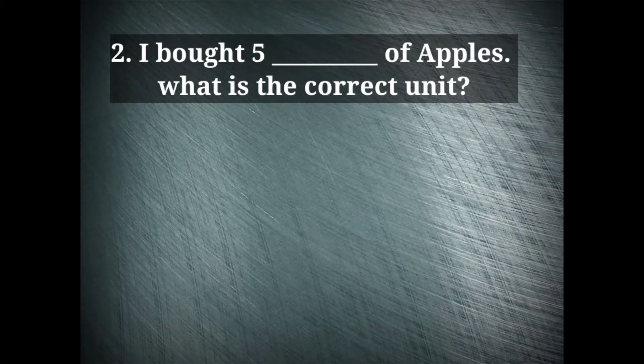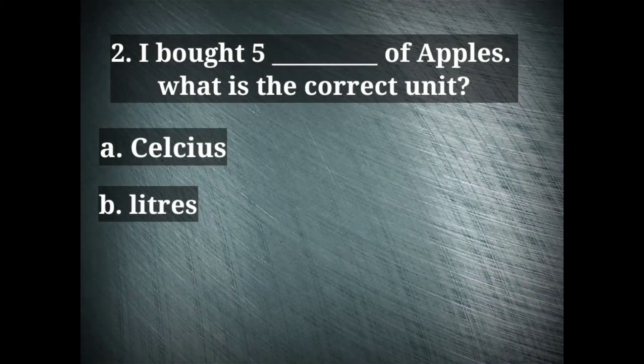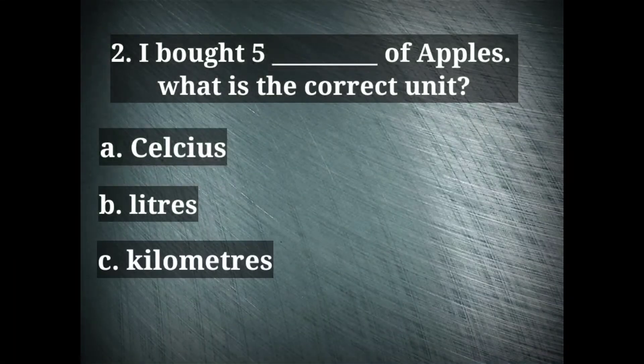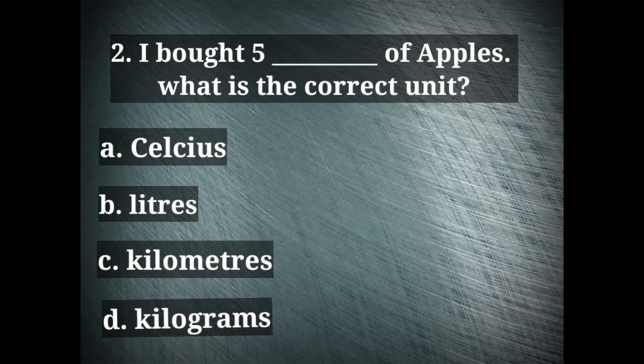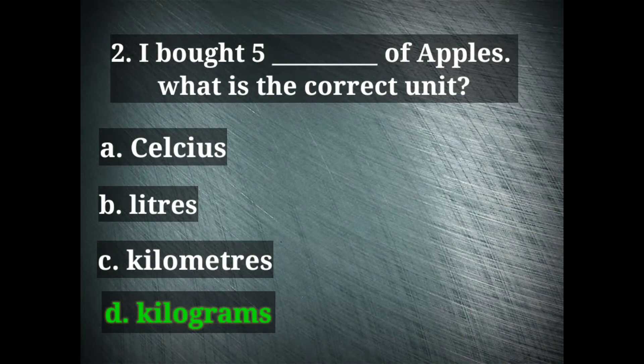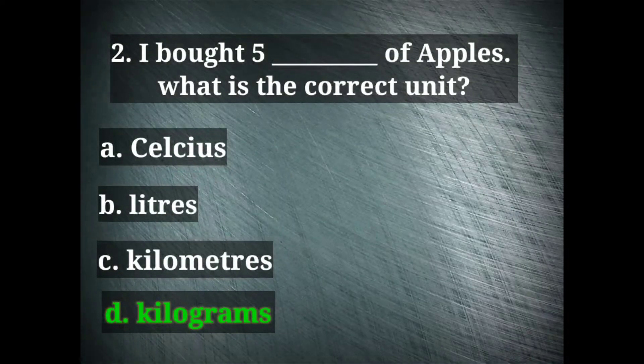Next question is, I bought 5 dash of apples. What is the correct unit? The options we have are celsius, litres, kilometers and kilograms. The right option here is option D, kilograms. We used to say 5 kg of apples, that kg stands for kilograms here.